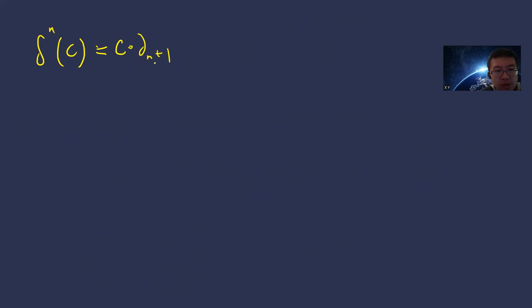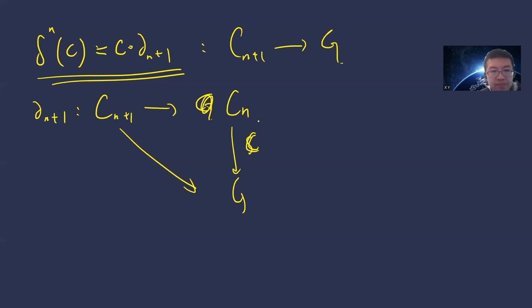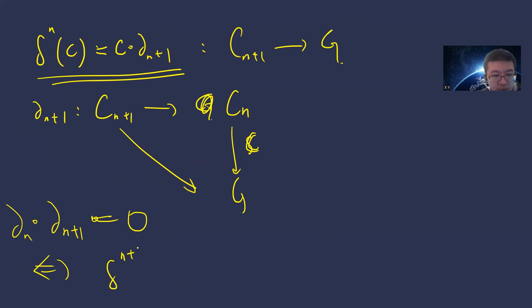So this definition maps Cⁿ⁺¹ to G because ∂ₙ₊₁ maps Cₙ₊₁ to Cₙ and then c maps Cₙ to G. And the fact that ∂ₙ ∘ ∂ₙ₊₁ = 0 on the chain side translates exactly into δₙ₊₁ ∘ δₙ = 0 on the cochain side.